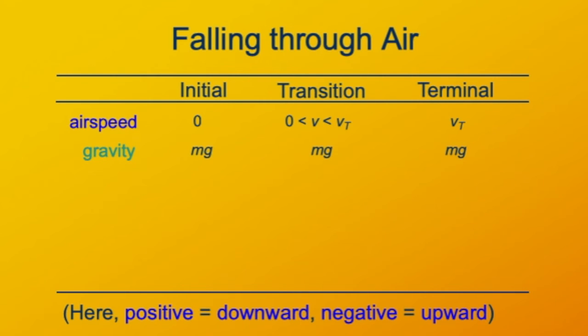The force of gravity is the same at all three phases of this process. Initially, gravity is pulling down on the object with the force mg. As it's speeding up, gravity is pulling down on it with the force mg. And at the terminal phase, gravity is pulling down with the force of magnitude mg.